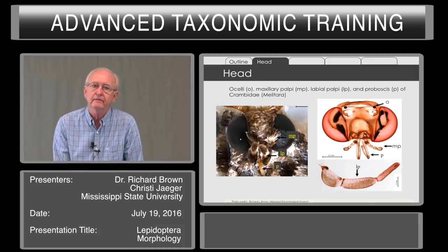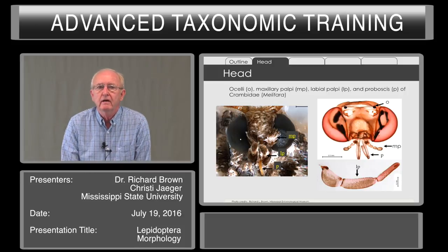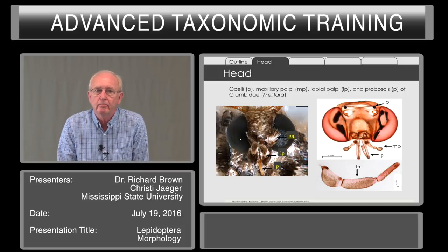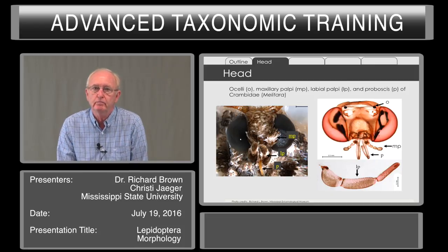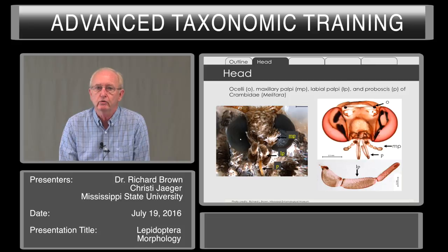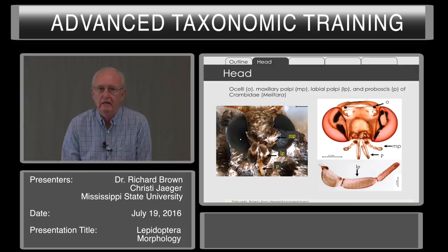The head, as with the rest of the body, is covered with scales. You see in the photograph on the left the various structures — maxillary palpy, the labial palpy, and the proboscis — but on the right you see them much better after the scales are removed. The labial palpy are large, three-segmented, in most Lepidoptera. The maxillary palpy are lost and reduced in many.